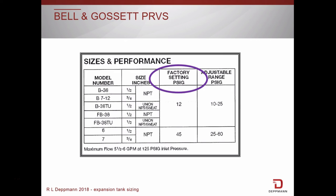Watch your specifications. The Bell & Gossett PRV model B7-12 shown here has an adjustable range of 10 to 25 psig. The model number 7 has an adjustable range of 25 to 60 psig. We also have others for higher fill pressures.